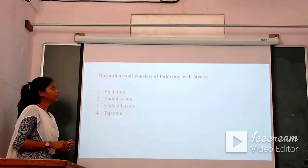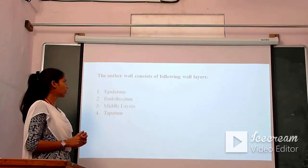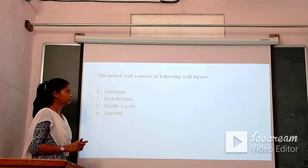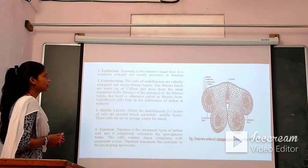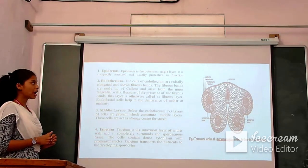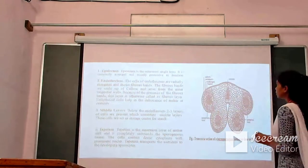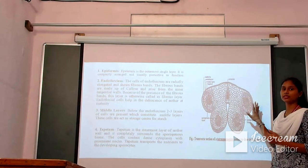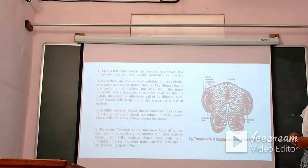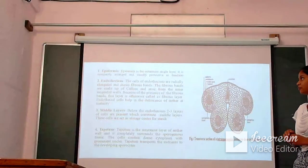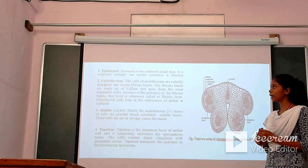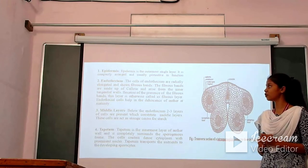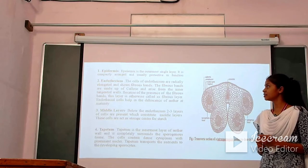Now, what are the layers of the anther wall? Basically there are four layers: epidermis, endothecium, middle layers, and tapetum. Epidermis is the outermost single layer; it is compactly arranged and usually protective in function. This outer layer is known as epidermis — it is a single-cell layer and its function is protection. The second layer is known as endothecium. The cells of endothecium are radially elongated and show fibrous bands made up of cellulose arising from the inner tangential walls. Because of these fibrous bands, this layer is otherwise called the fibrous layer.